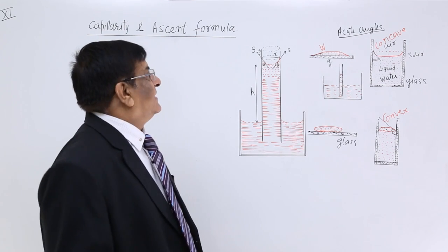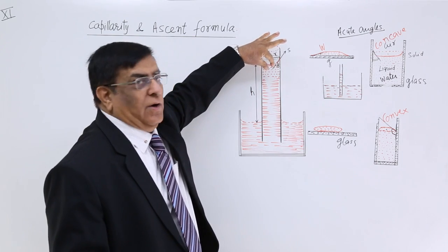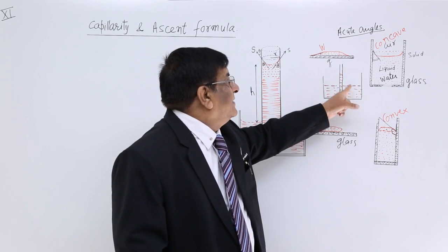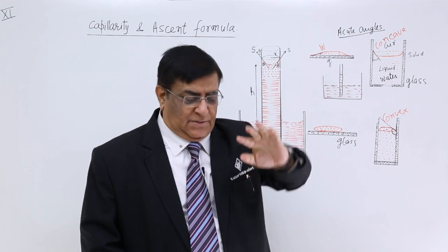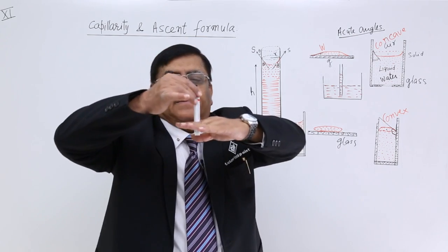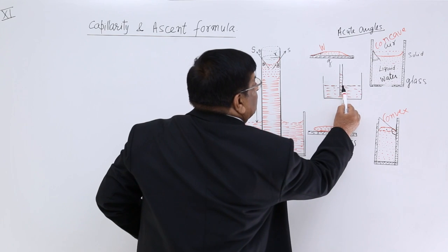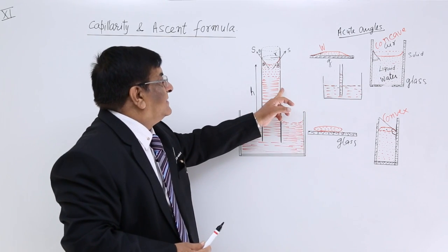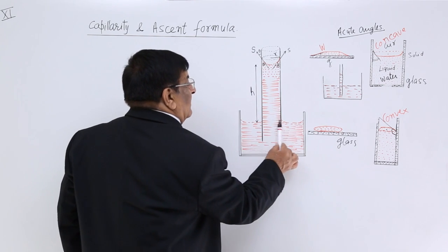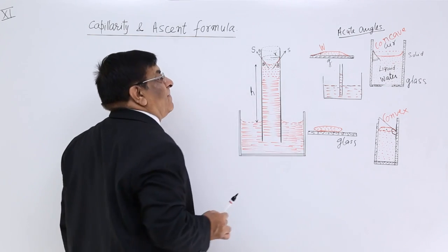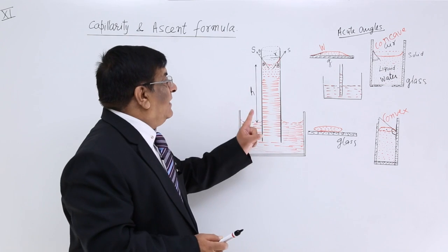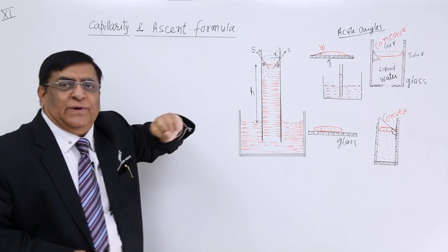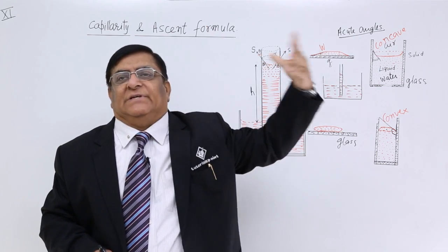A capillary is a tube which has a very small bore — the radius is very small and it is open at both ends. When we dip a capillary into a liquid, we find a difference in levels of liquid in the trough versus in the capillary. In the case of a glass capillary and water, the water level rises up inside the capillary. This phenomenon is known as capillarity.